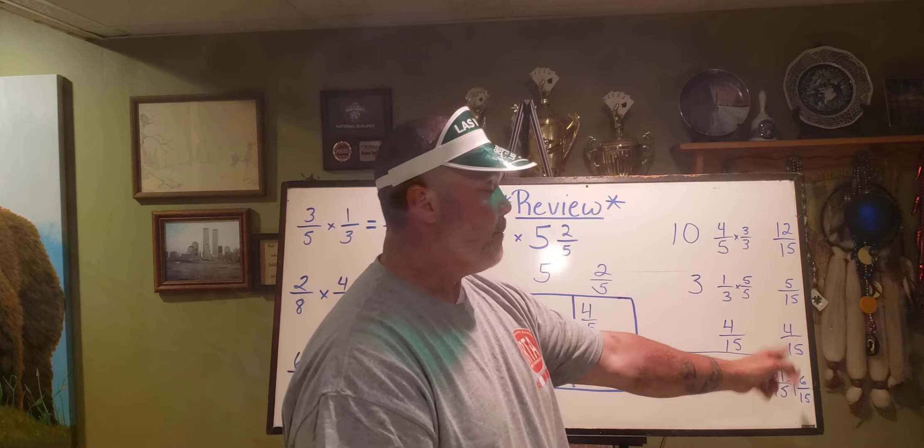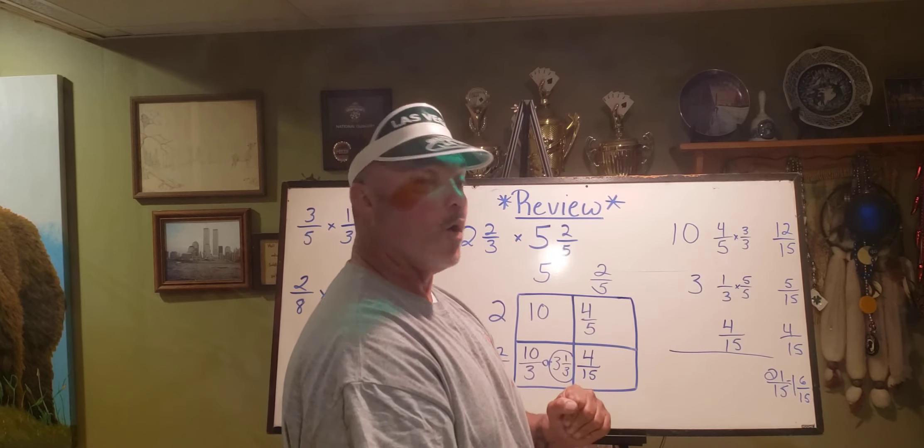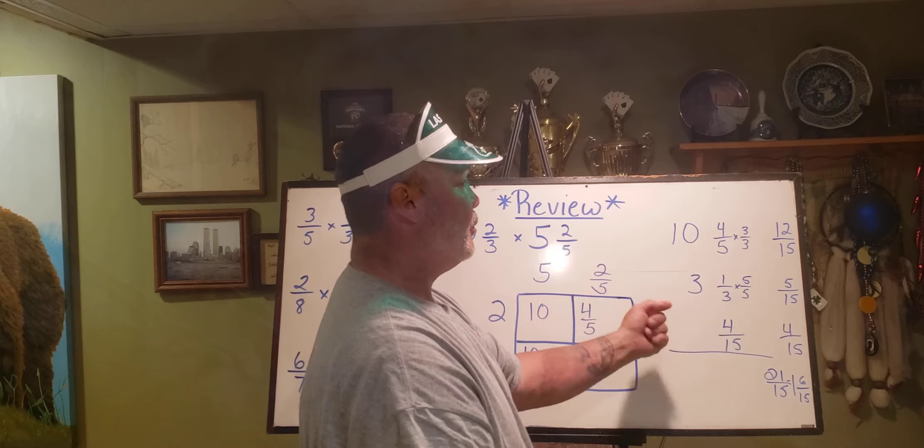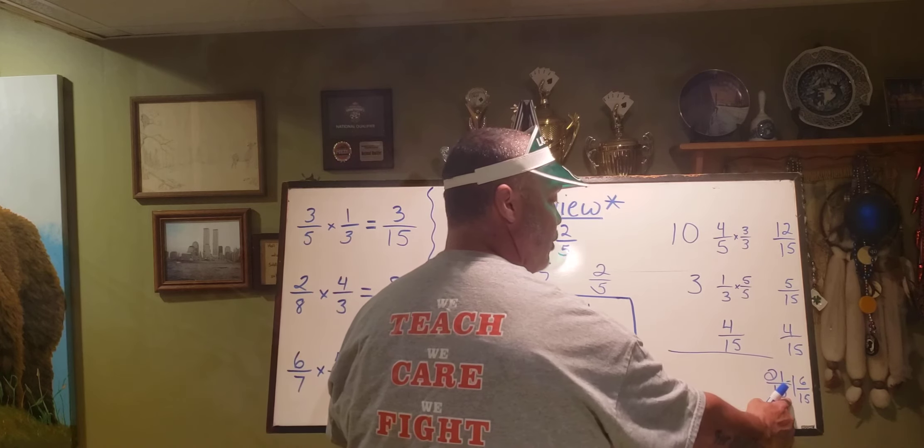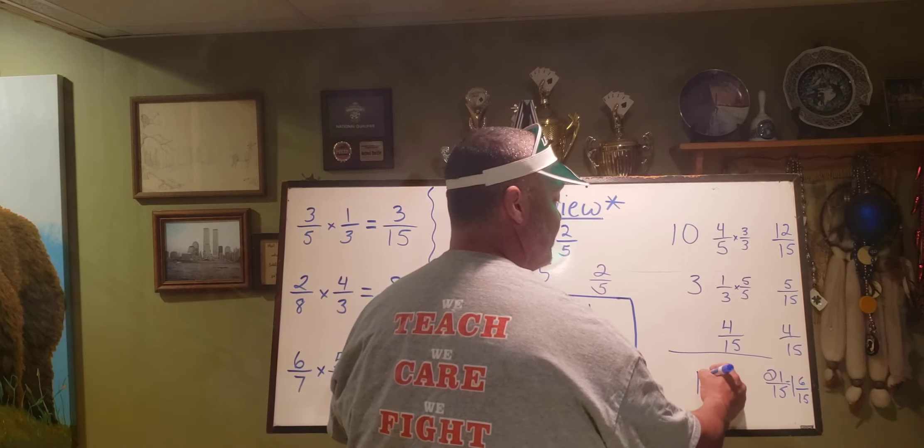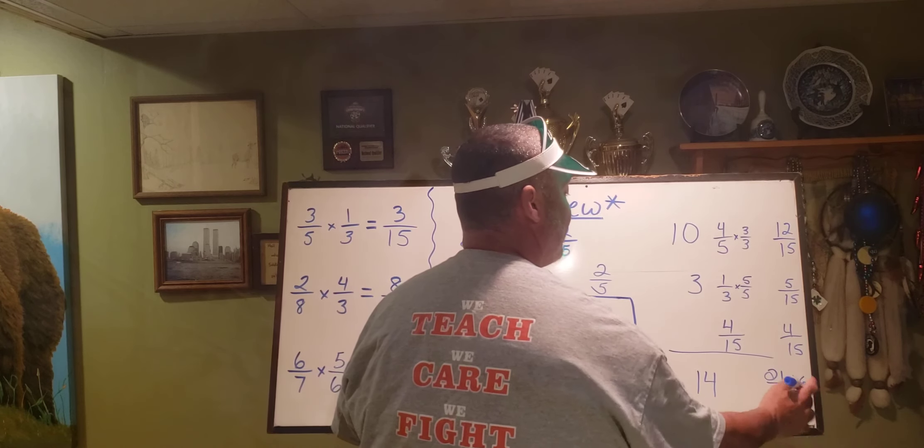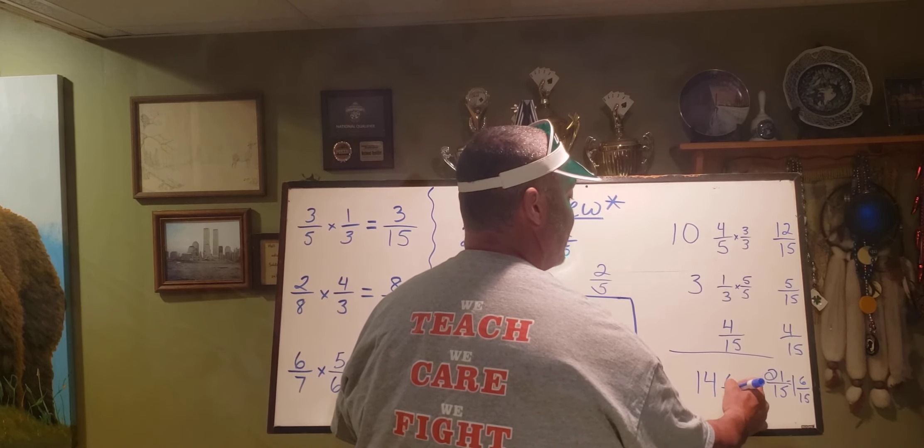Now I have that mixed number to add with these whole numbers. Well, ten plus three is thirteen, plus the one is fourteen. And my remaining fraction, six fifteenths.